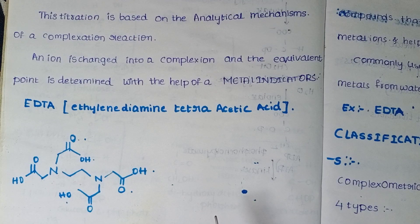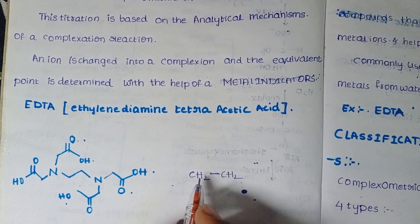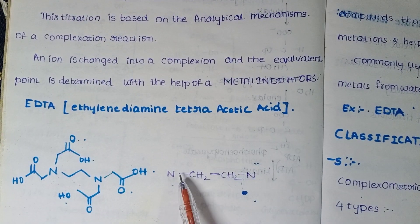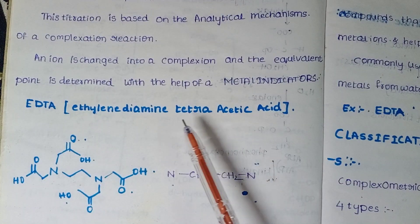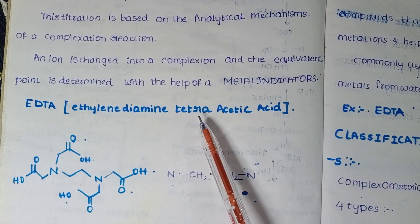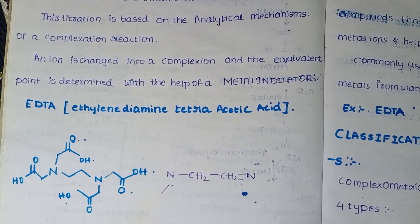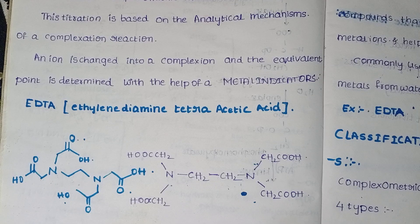Ethylene is C2H4. I have written two nitrogens for diamine. Next, tetraacetic — this is the amino acid group. Each nitrogen consists of two acetic acid groups, making four acetic groups total. Complexometric titrations most commonly use EDTA.